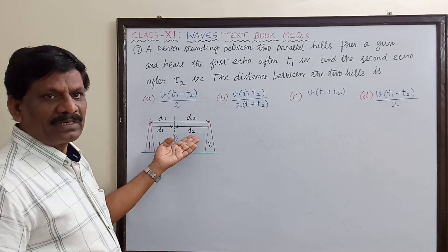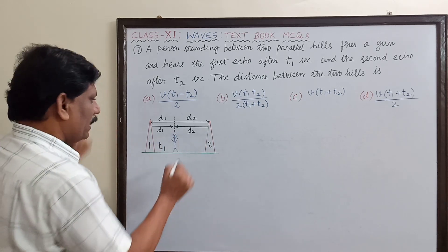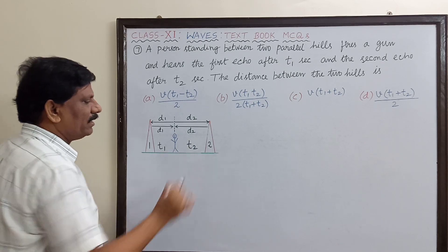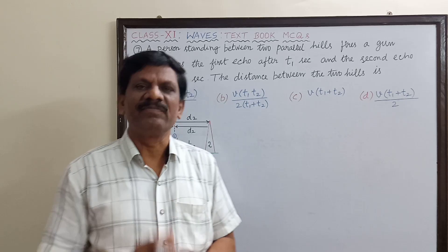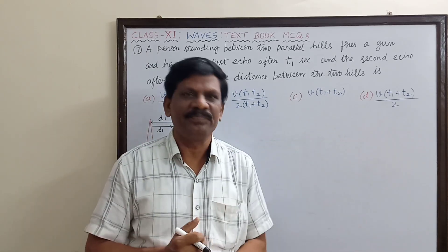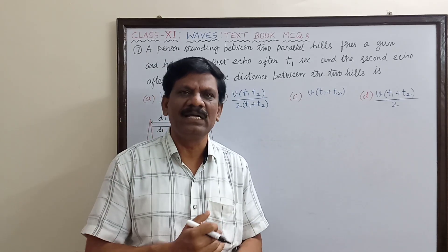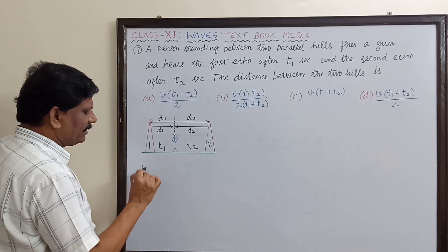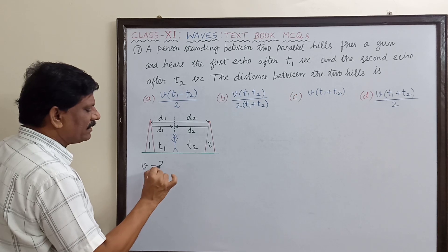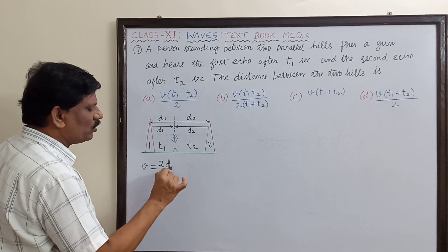This takes a time t2. Now what is the clue here? The velocity of sound in both directions remains the same. The velocity of sound is the same. So on the left side, the velocity v is equal to the total distance traveled, 2d1, divided by t1.